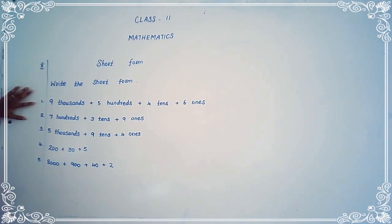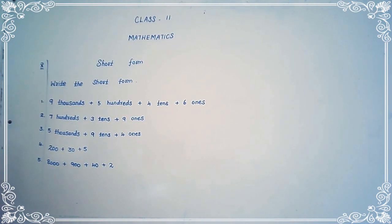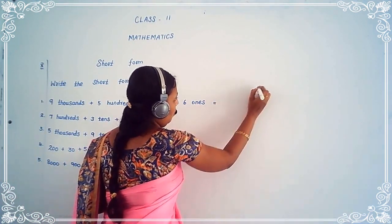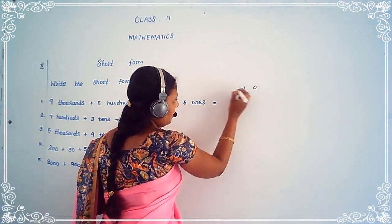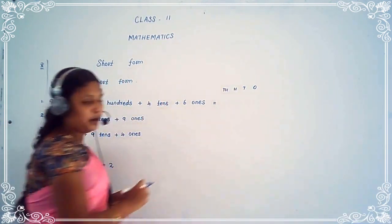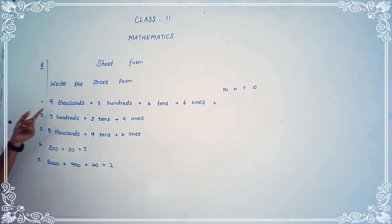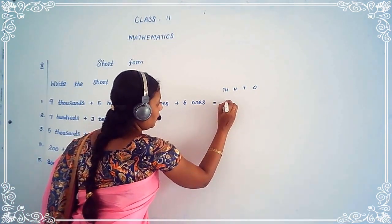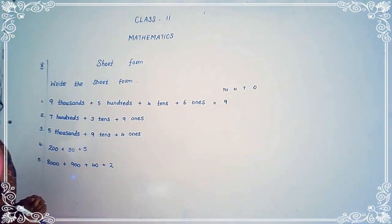See the first one: 9,000 plus 500 plus 4 tens plus 6 ones. First, write in periods — ones, tens, hundreds, and thousands. How many thousands is here? 9,000. So we have to write nine in the thousands place.